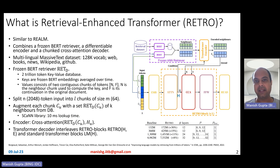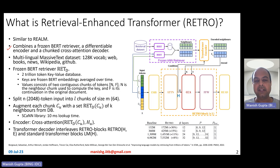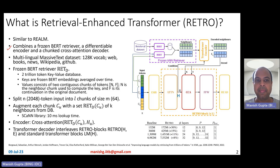What is Retrieval Enhanced Transformer, or RETRO? It's a model which is very similar to REALM. It's basically using retrieval augmentation for natural language generation. It combines a frozen BERT retriever, a differentiable encoder, and a chunked cross-attention decoder. It's essentially a transformer-based encoder-decoder model along with a retriever.